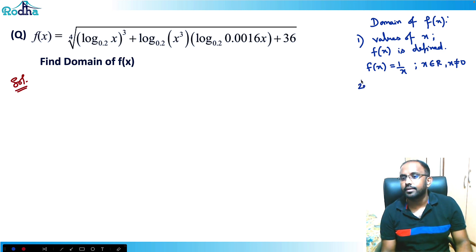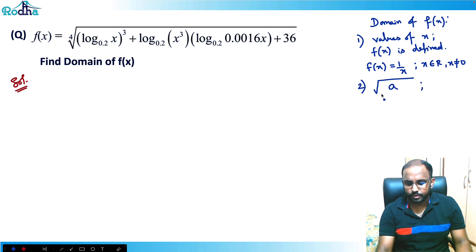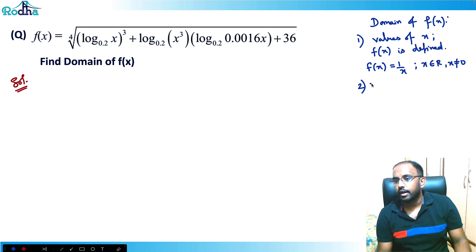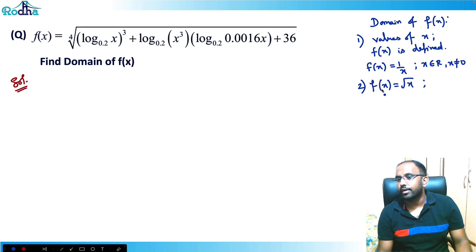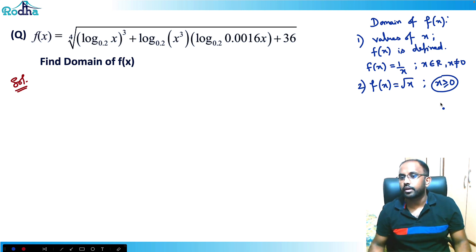The second thing to care about is whatever we have under a square root. For example, if f(x) = √x, then f(x) is defined only when x ≥ 0. So x ≥ 0 is the domain in that case.